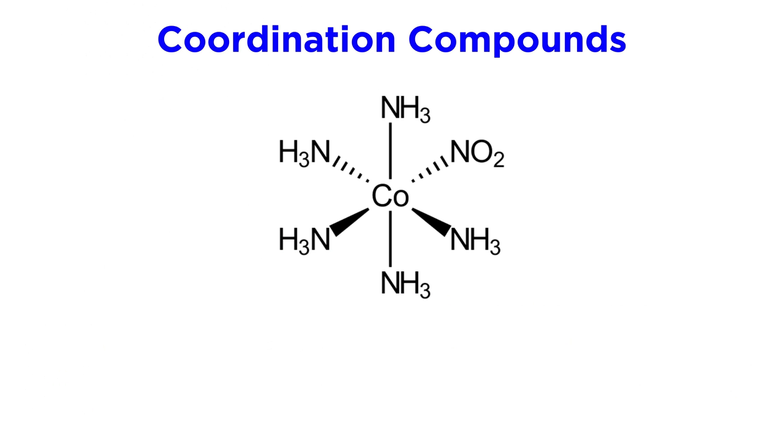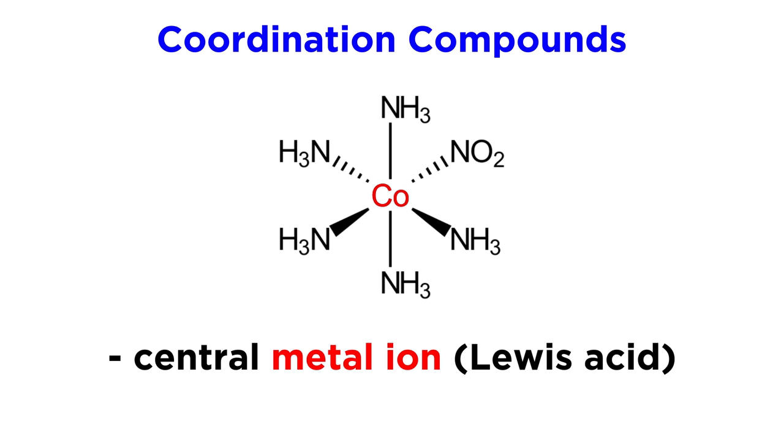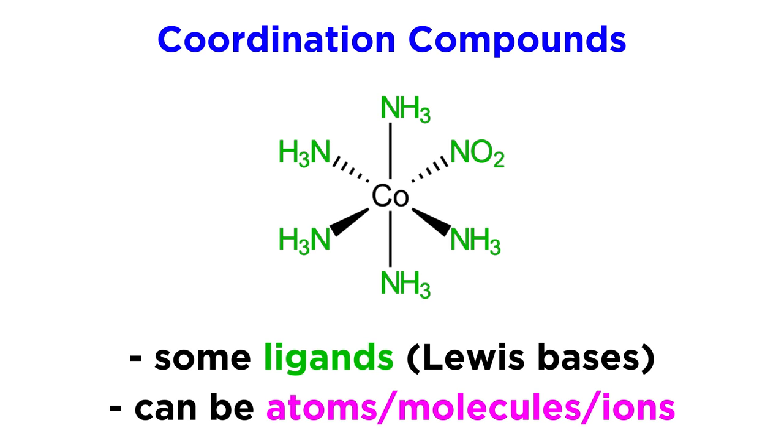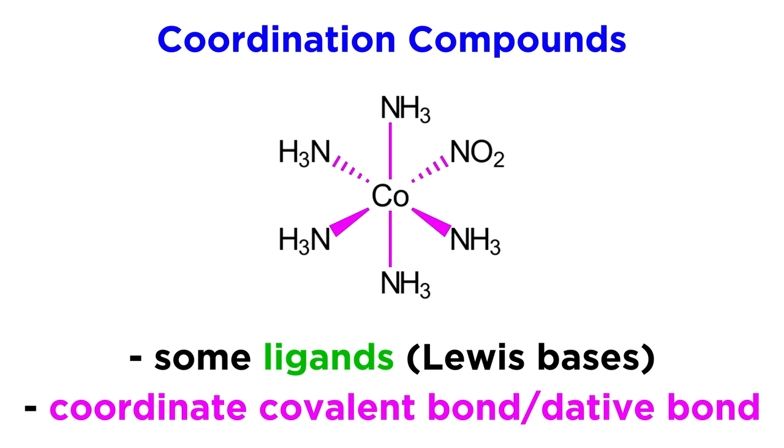Coordination compounds are compounds in which a central metal ion acts as a Lewis acid, and a certain number of ligands, each with some electron excess, act as Lewis bases and coordinate to the central atom to form a complex. These ligands can be atoms, molecules, or ions, but they usually have a lone pair that can coordinate to the electron-deficient metal ion to form what is called a coordinate-covalent bond, sometimes also called a dative bond. These are different from the ionic and covalent bonds that we are used to.